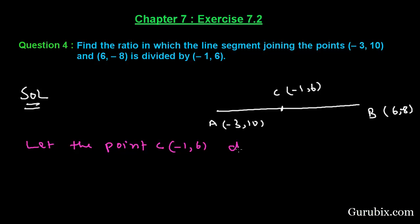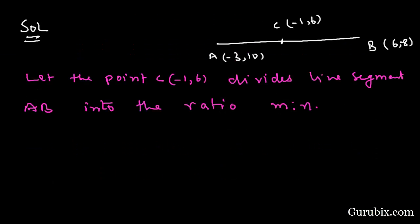Let the point C (-1, 6) divide line segment AB into the ratio m is to n. Now we shall find the x-coordinate of point C by using the section formula. The x-coordinate of point C is -1.